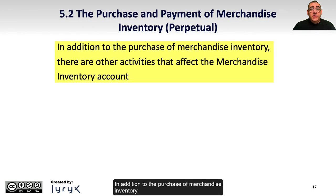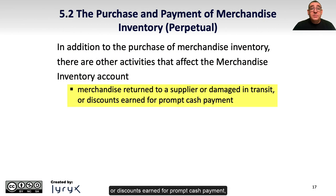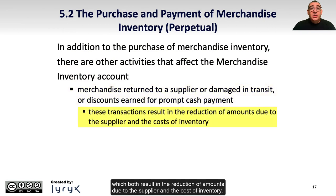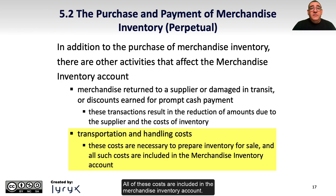In addition to the purchase of merchandise inventory, there are other activities that affect the merchandise inventory account. These can include merchandise that's returned to a supplier or damaged in transit, or discounts earned for prompt cash payment, which both result in the reduction of amounts due to the supplier and the cost of inventory. There may also be transportation and handling costs necessary to have the inventory available and prepared for sale. All of these costs are included in the merchandise inventory account.